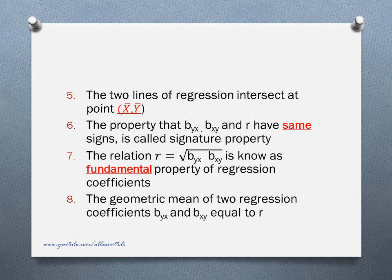The two lines of regression intersect at the point X-bar, Y-bar. The property that b_yx, b_xy, and R have the same signs — that is, positive or negative — is called the signature property. That means if b_yx is positive, then b_xy is also positive and correlation coefficient R is also positive. The relation R equals square root of b_yx times b_xy is known as the fundamental property of regression coefficients. The geometric mean of two regression coefficients b_yx and b_xy is equal to R.